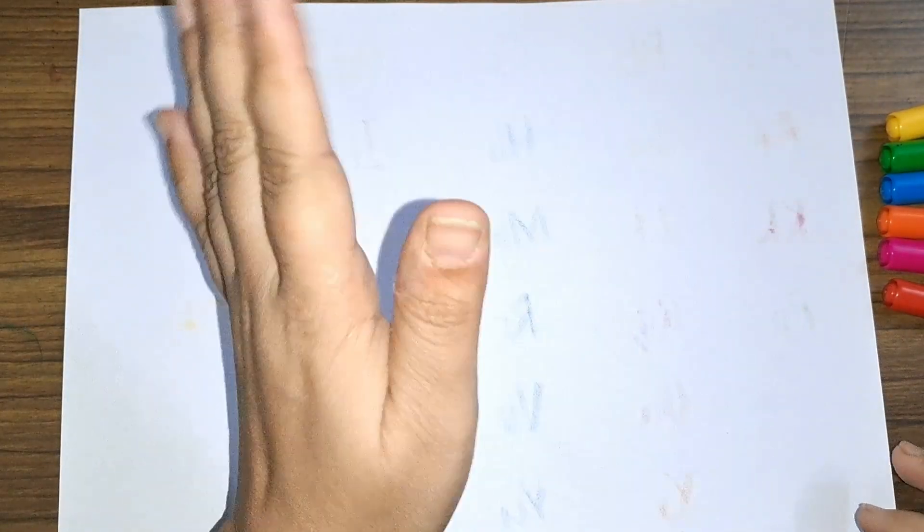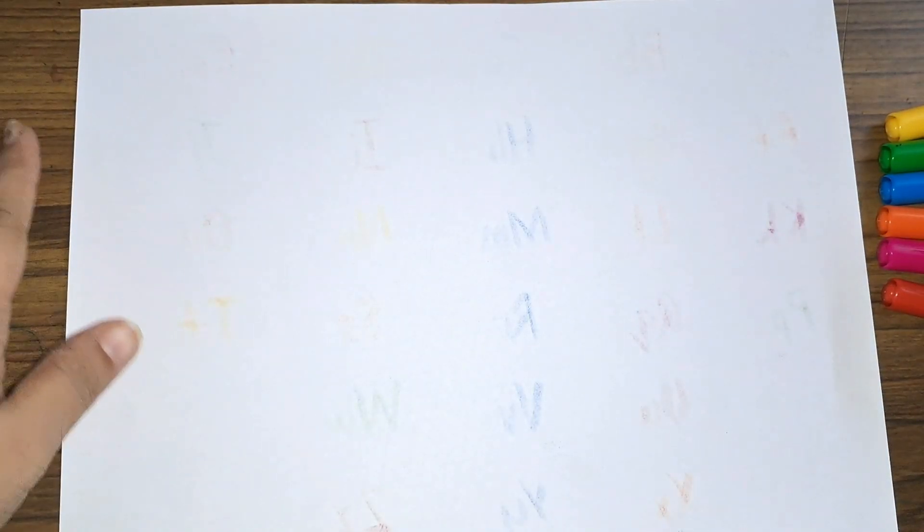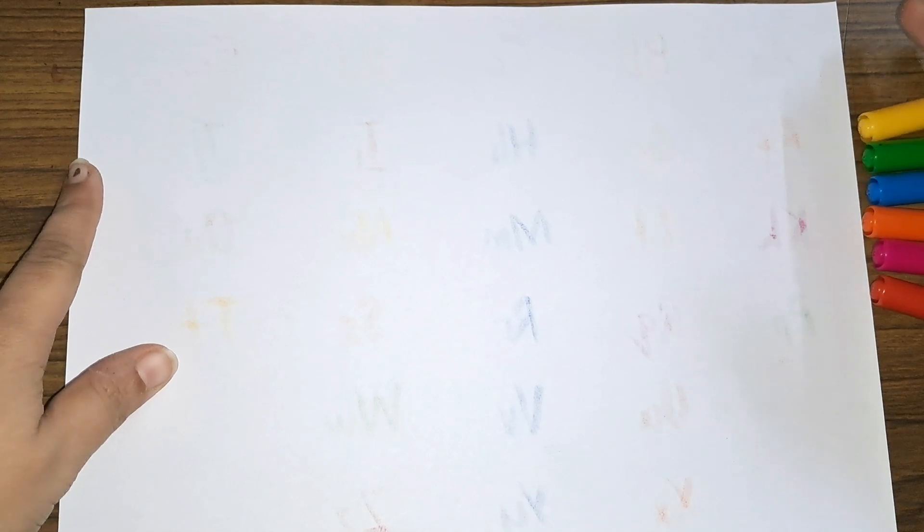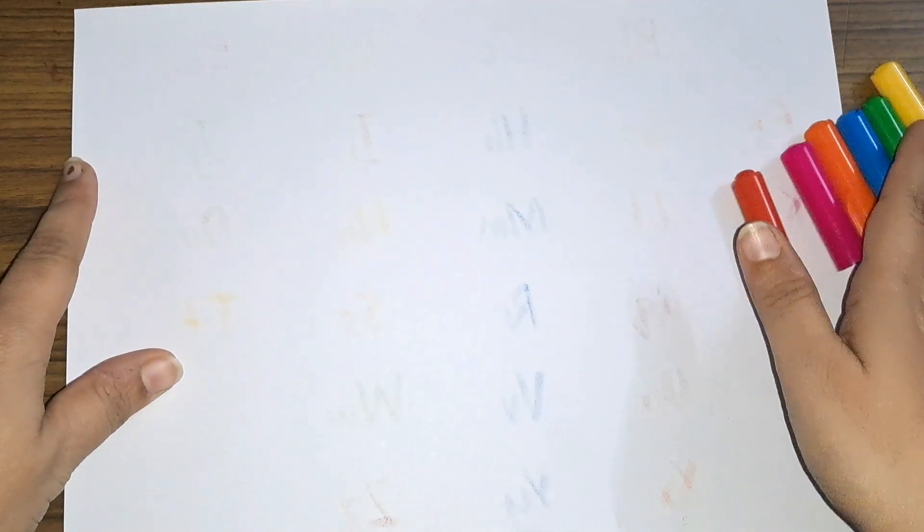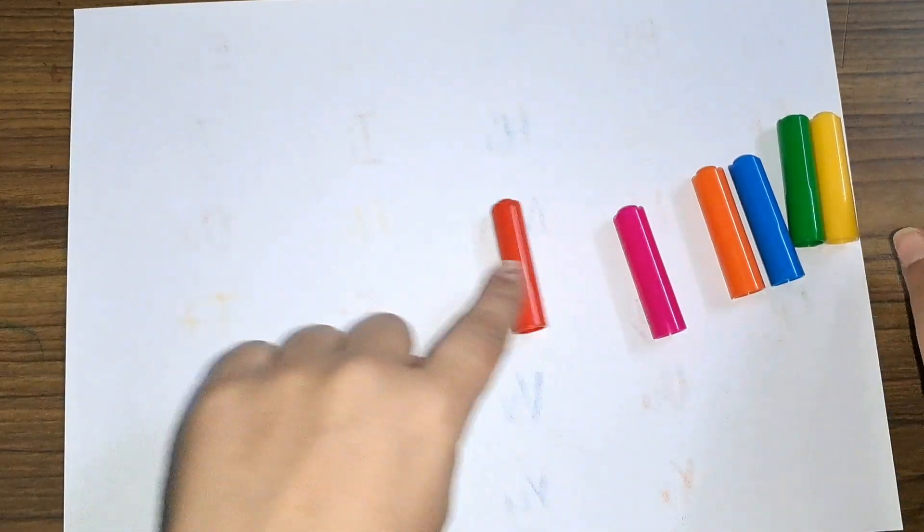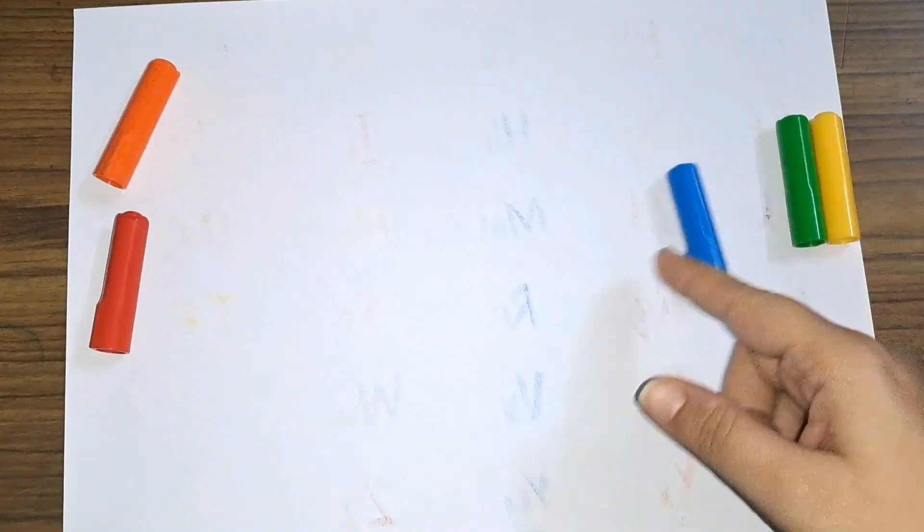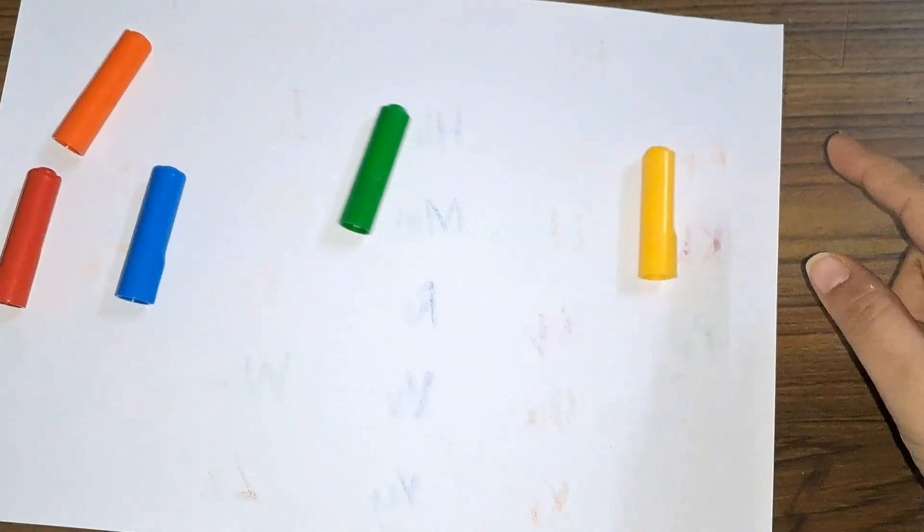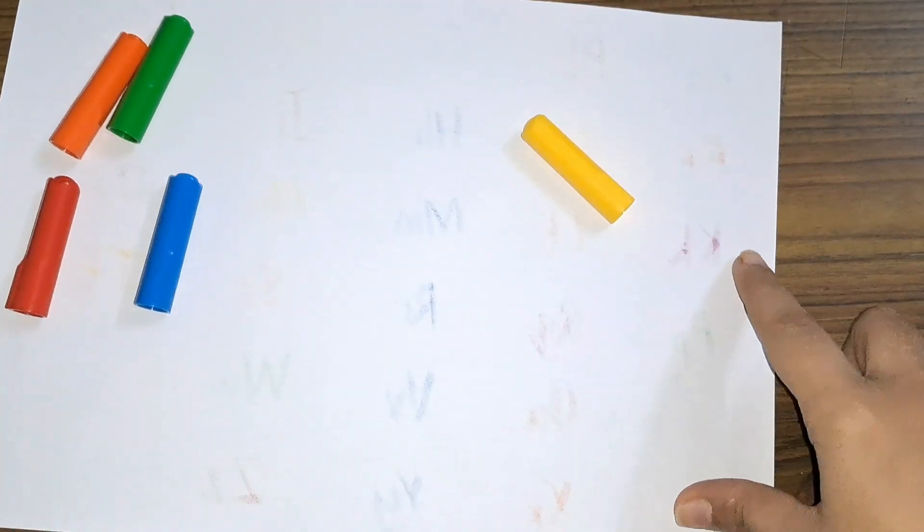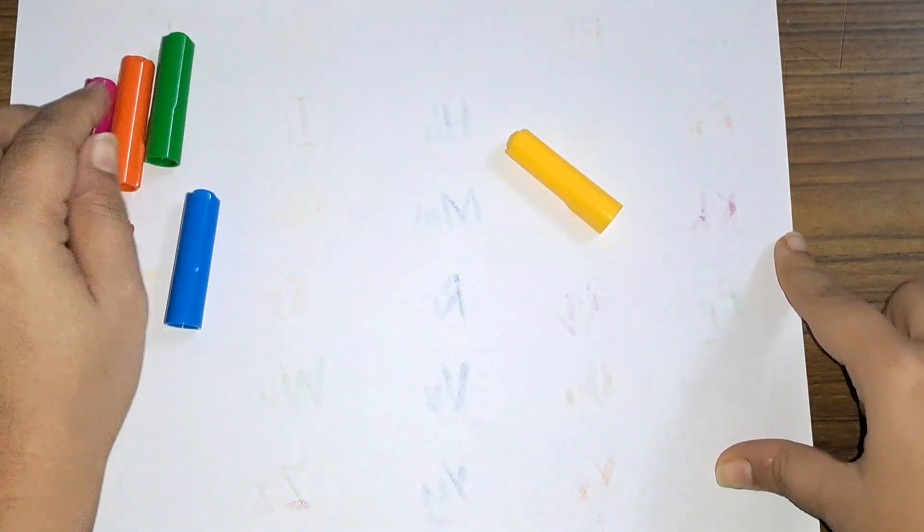Hey kids, how are you today? Let us learn some numbers today. But first, let us learn some colors. These are the colors: red, pink, orange, blue, green, and yellow.